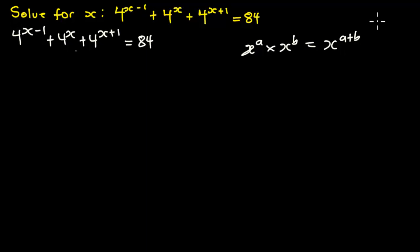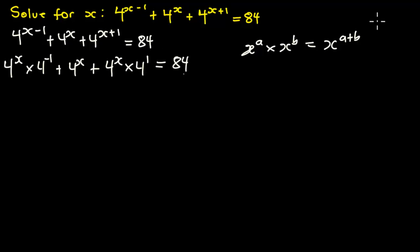We want to rewrite the first and third terms in that form. So we get: 4 exponent x multiplying 4 exponent (negative 1), plus 4 exponent x, plus 4 exponent x multiplying 4 exponent 1, all equal to 84.